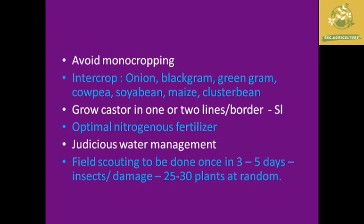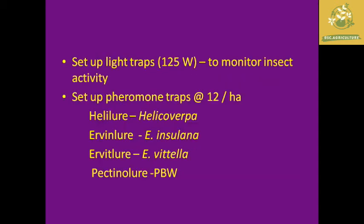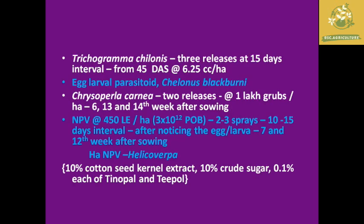Avoid mono-cropping; intercropping with onion, black gram, green gram, cowpea, soybean, maize, and cluster bean is recommended. Optimum nitrogen fertilizer usage is recommended. Field scouting should be done randomly for 25 to 30 plants at 3 to 5 day intervals. Set up light traps and pheromone traps at 12 per hectare — such as Heliure and Pectino lures — based on the species.